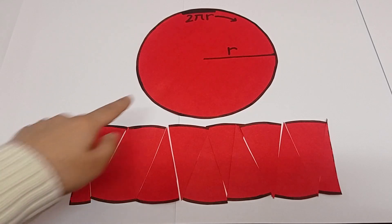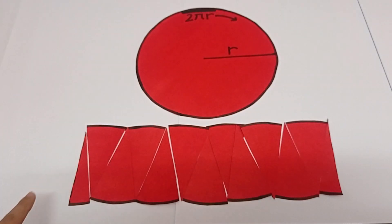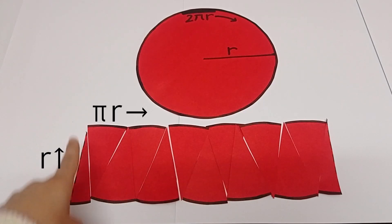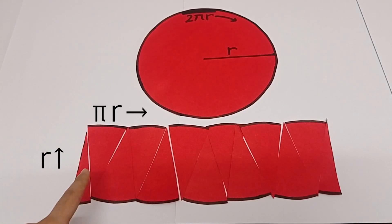This other side is the same as the radius of the circle or r. So, the area of the rectangle becomes pi r multiplied by r, i.e. pi r square.